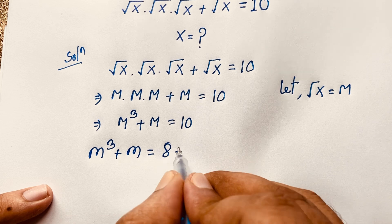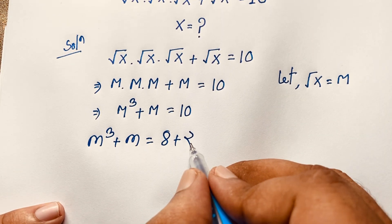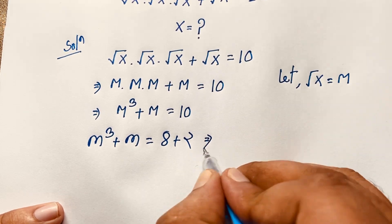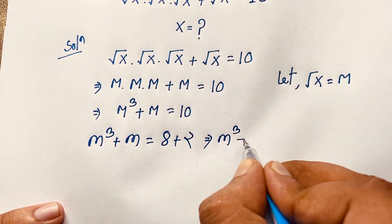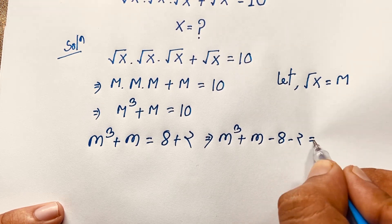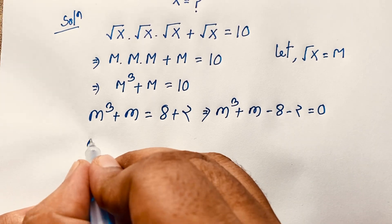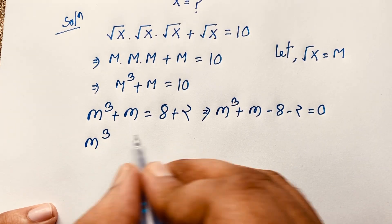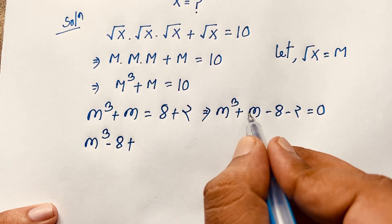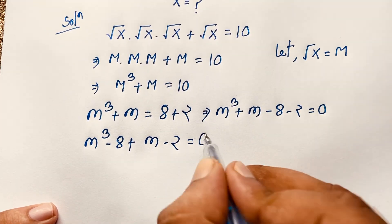Now, 10 can be written as 8 plus 2. If I move this 8 and 2 to the other side, they become negative. So here: m³ plus m minus 8 minus 2 is equal to 0.